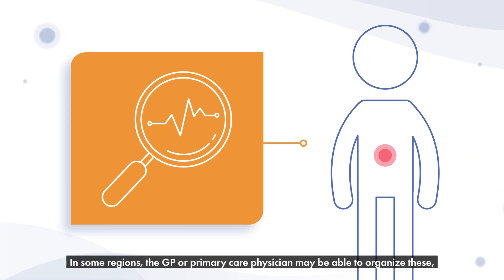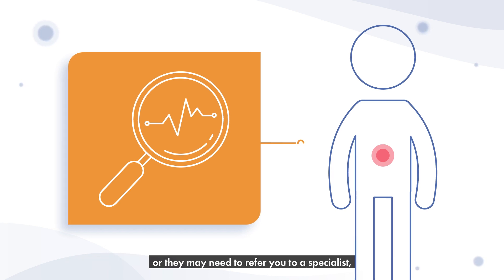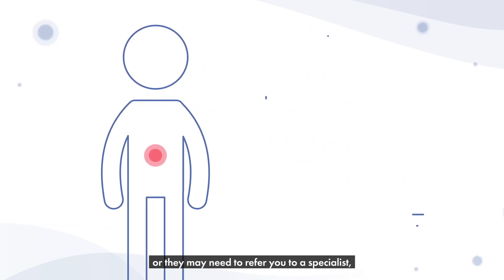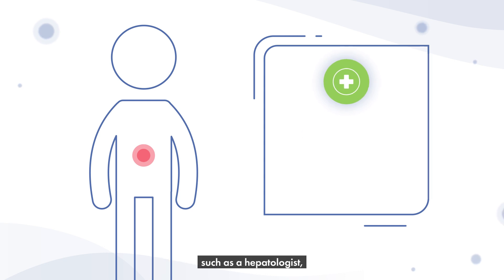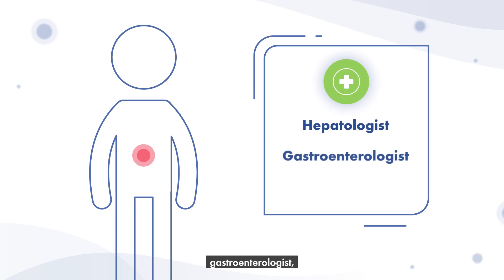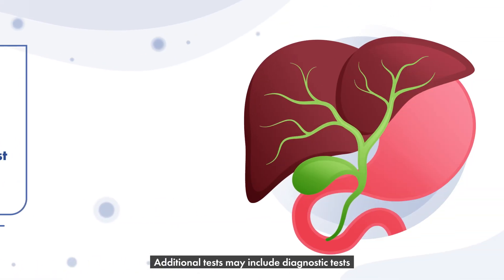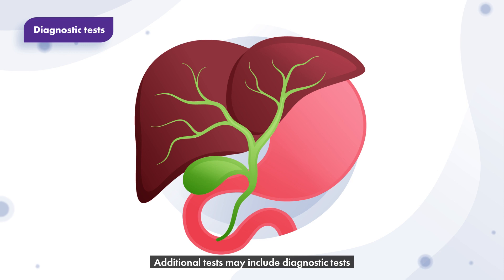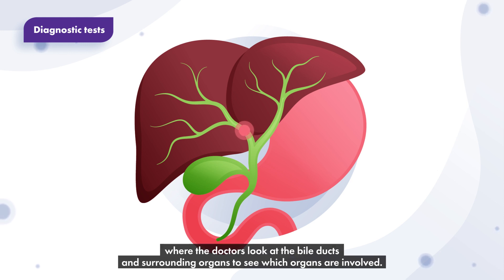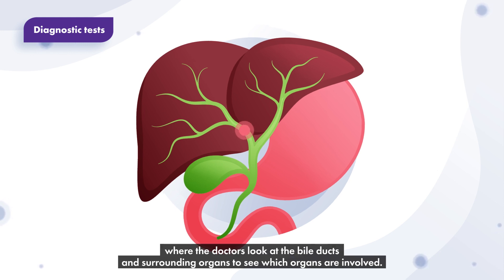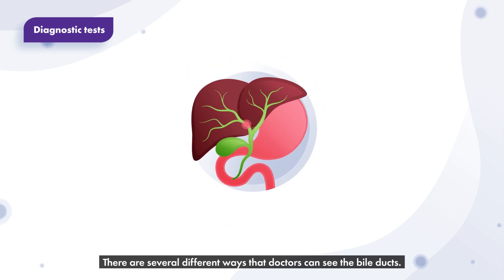In some regions, the GP or primary care physician may be able to organise these, or they may need to refer you to a specialist, such as a hepatologist, gastroenterologist, or an oncologist, who can organise further tests. Additional tests may include diagnostic tests where the doctors look at the bile ducts and surrounding organs to see which organs are involved. There are several different ways that doctors can see the bile ducts.